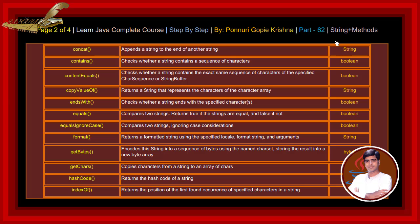copyValueOf method returns a string that represents the characters of the character array. endsWith method checks whether a string ends with the specified characters. equals method compares two strings, returning true if the strings are equal and false if not. equalsIgnoreCase method compares two strings ignoring case considerations.